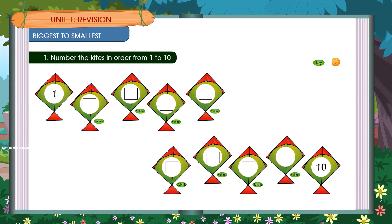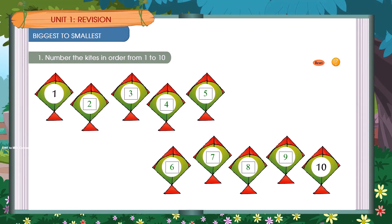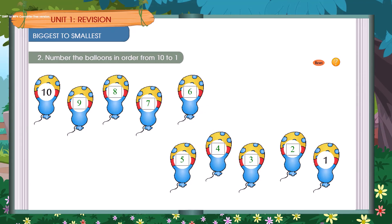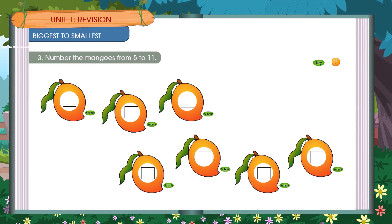1. Number the kites in order from 1 to 10. 2. Number the balloons in order from 10 to 1. 3. Number the mangoes from 5 to 11.